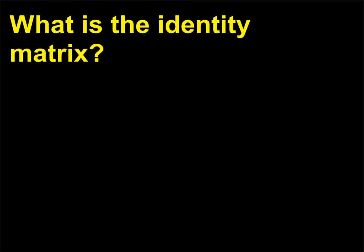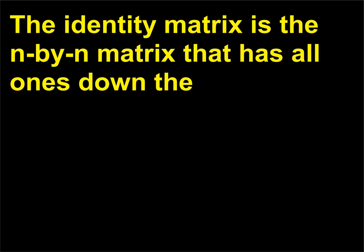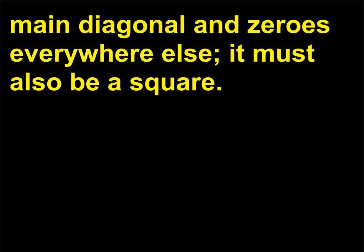What is the identity matrix? The identity matrix is the n-by-n matrix that has all ones down the main diagonal and zeros everywhere else; it must also be a square.